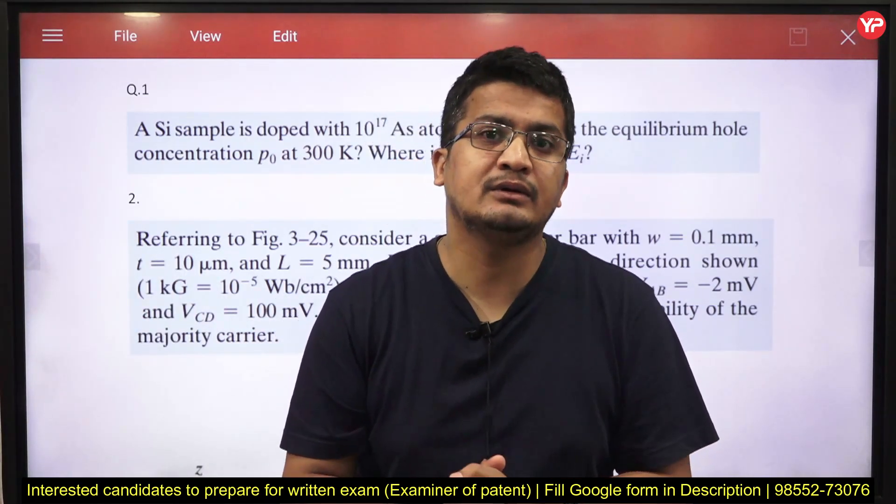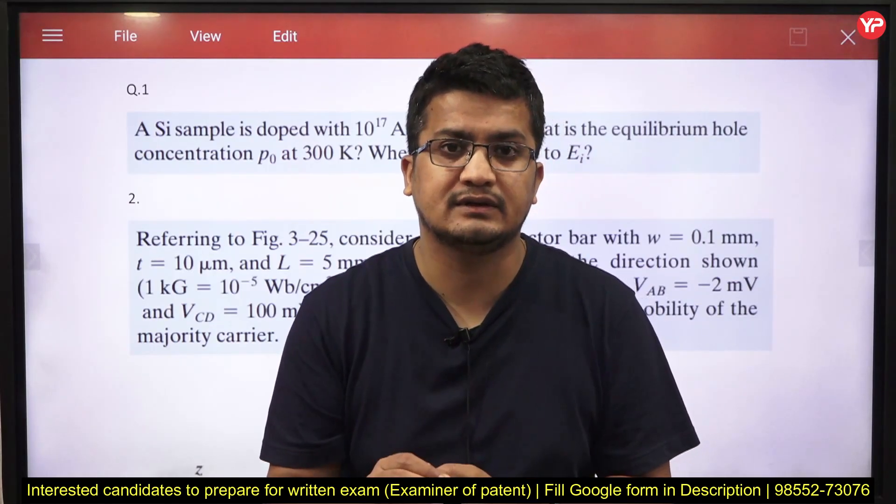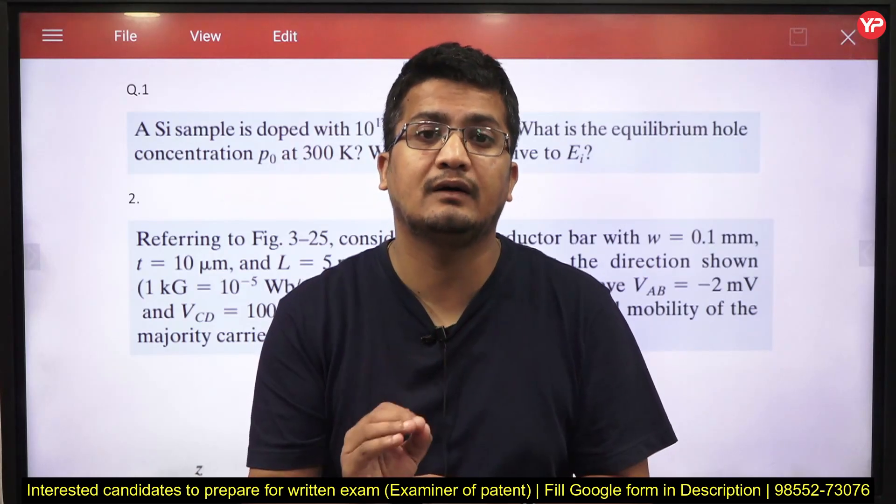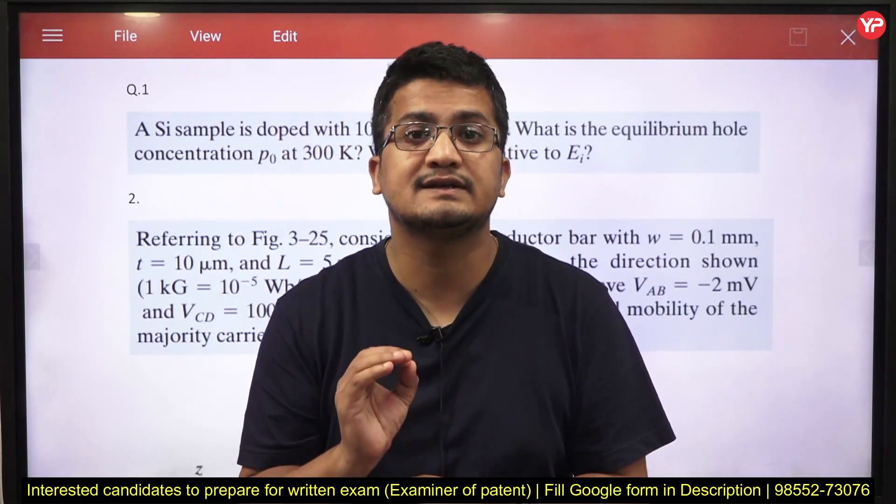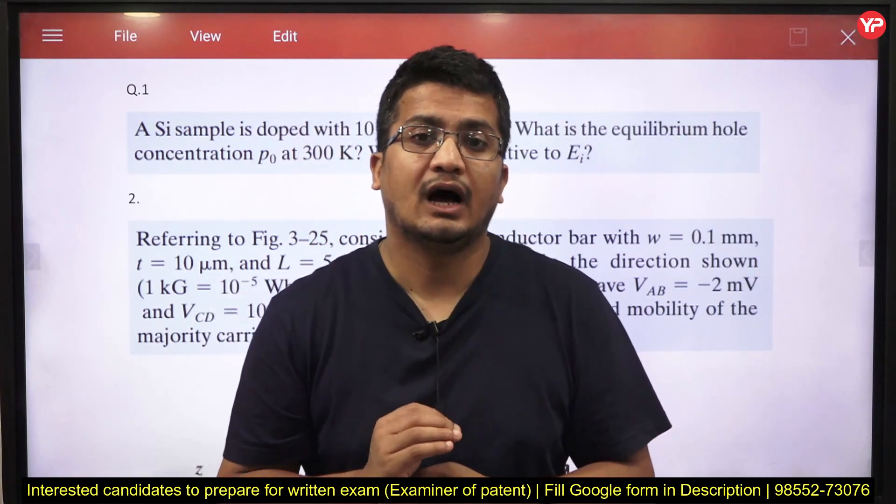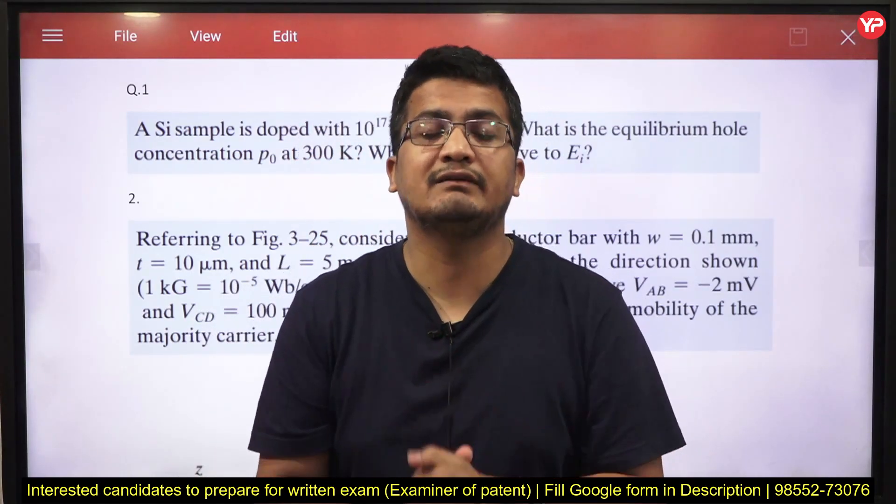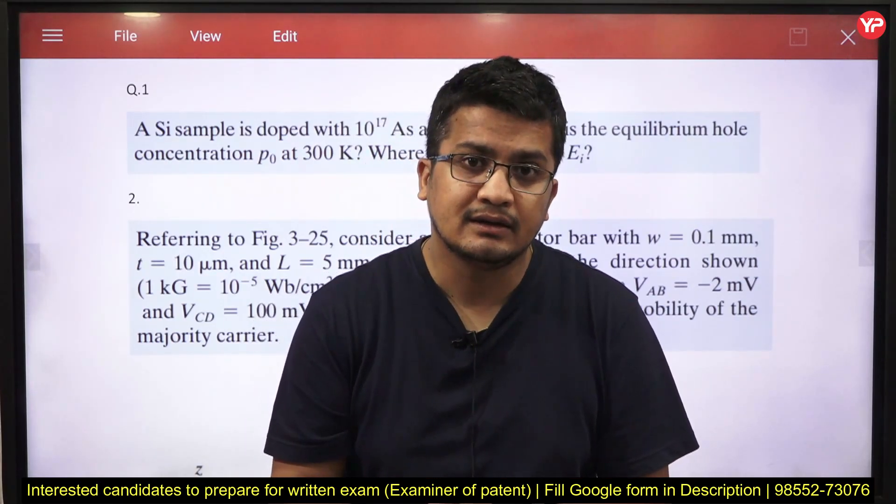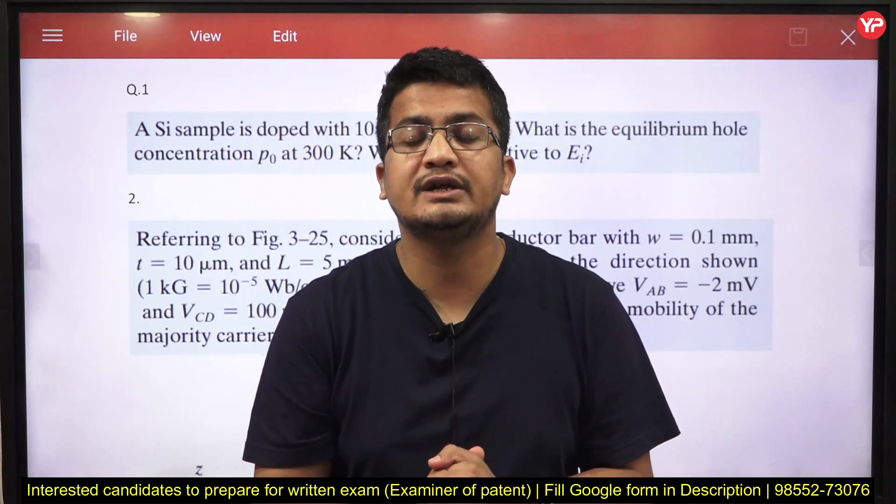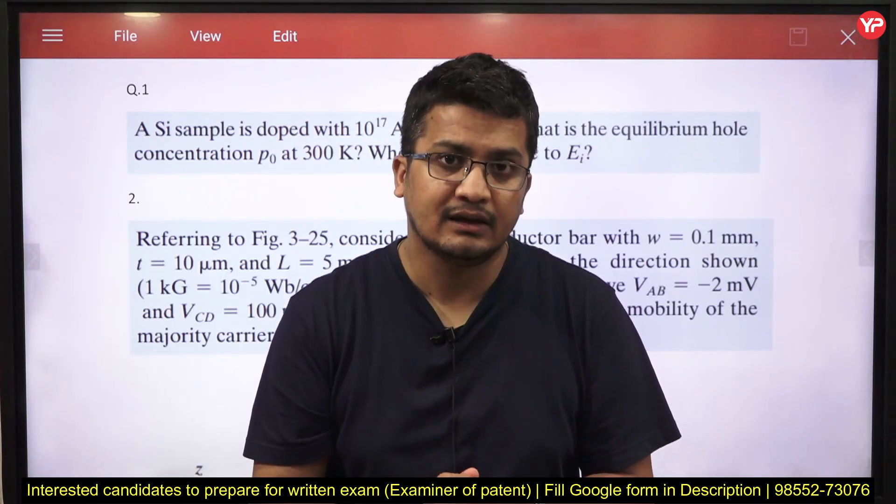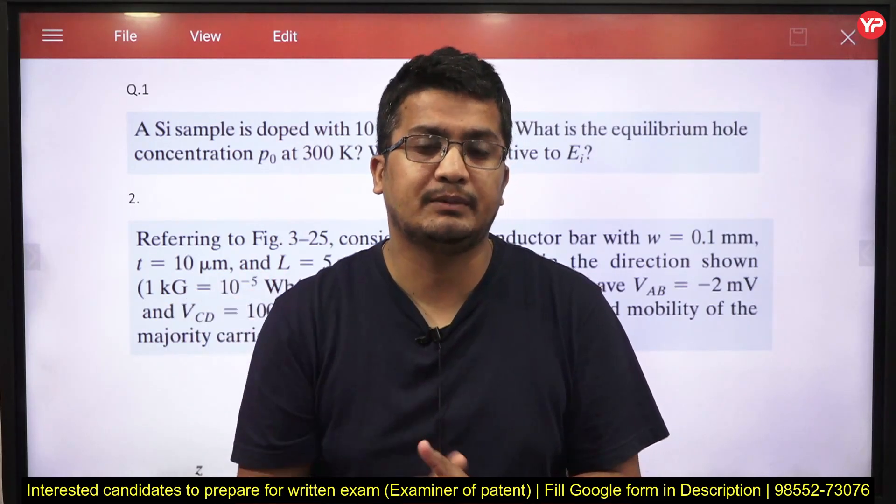Today in this video I am going to discuss with you only four to five questions which you need to prepare related to junction physics of the electronics devices and circuit. You might have studied there are various formulas how to calculate the Fermi energy level for N type semiconductor, P type semiconductor or intrinsic semiconductor. And you know EI is the notation used for the Fermi energy in the intrinsic semiconductor. EF is for the P type or N type.